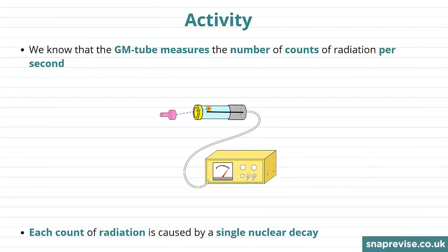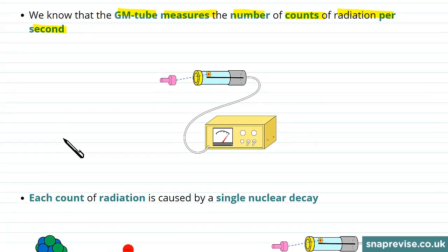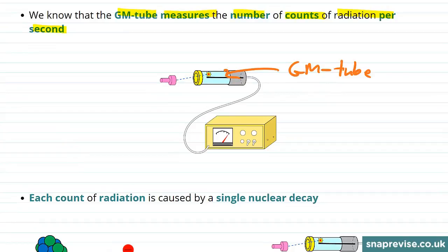Now let's be more precise and introduce the concept of activity. We know that this GM or Geiger-Müller tube measures the number of counts of radiation per second. Here is our GM tube, and here is our sample which is emitting a count of radiation.